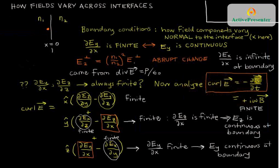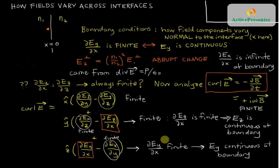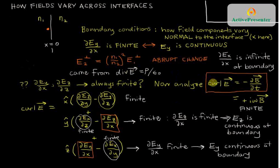We've now found all three components of the electric field at the boundary: Ex, the normal component, is discontinuous at the boundary, but Ez and Ey are continuous — they hold hands across the boundary. Your homework will be to come up with the similar rules for the perpendicular and parallel components of the magnetic field, and that's going to involve analyzing the other two Maxwell equations — not the two for divergence and curl of E, but those for divergence and curl of B.